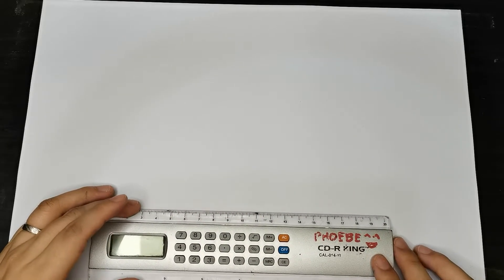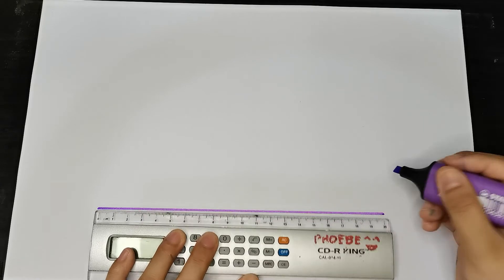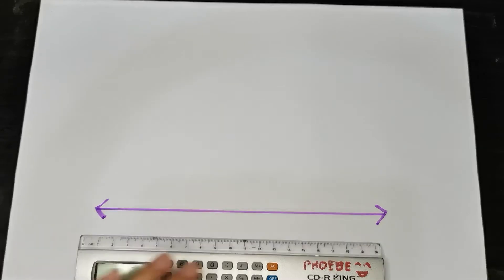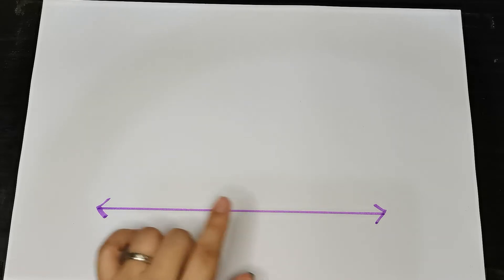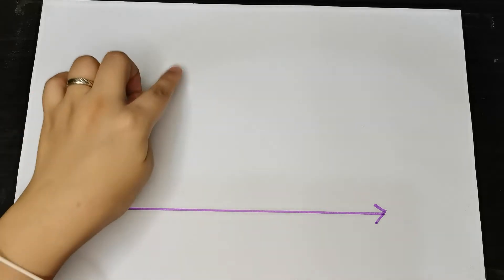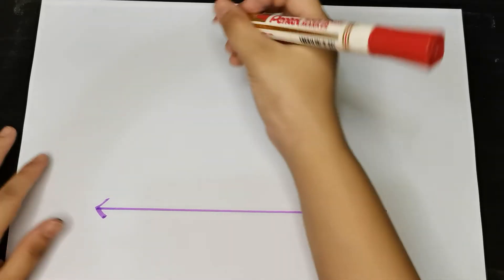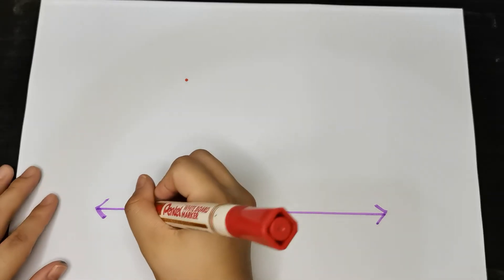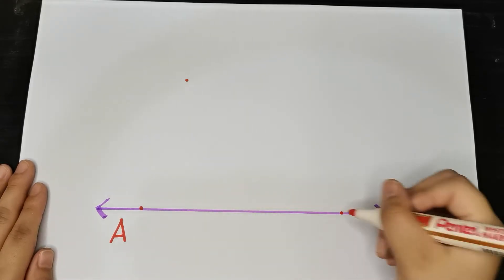So I am going to draw here a line, and what we are going to do is draw another line that is parallel to it. In order for us to draw a line parallel here, we need a point somewhere here. So if there is already a given point, that's good. But if there is none, then you are going to draw one. So let me name a point here as A and a point here as B.